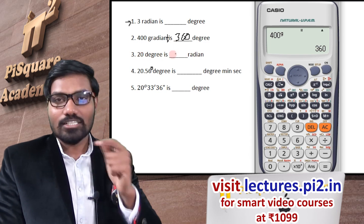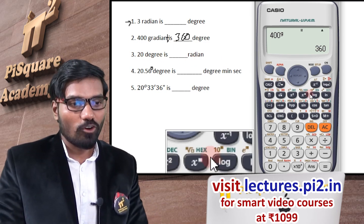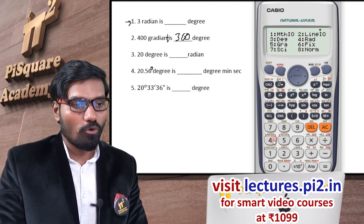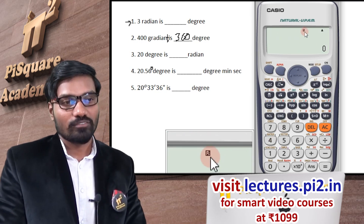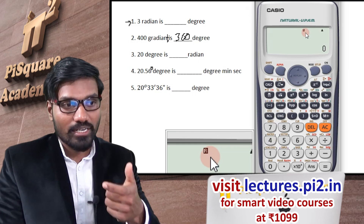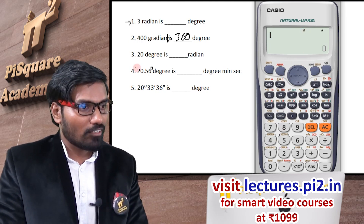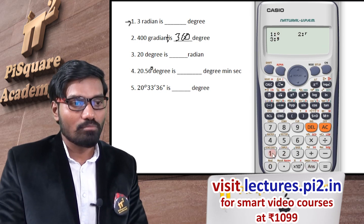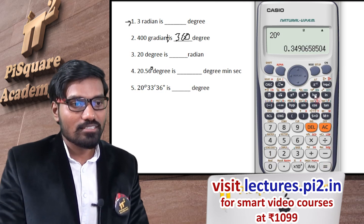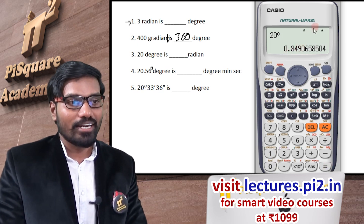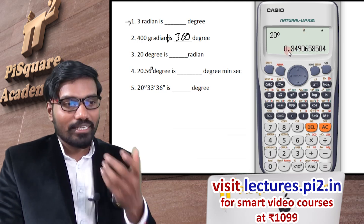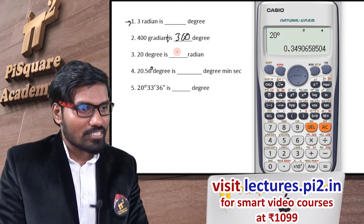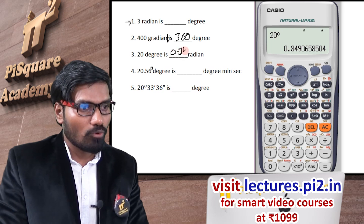Now I want to convert degrees to radians. You should change the calculator mode to radians — option 4. Now the calculator is in radian mode and results will be displayed in radians. Enter 20, then press the degree symbol — option 1 — to indicate it's 20 degrees. Press equals: 20 degrees equals 0.349 radians. The same process applies for converting gradians.